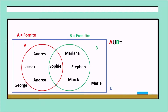In this case, we have A union B. That is equal to all elements that are in A and B. For example, we have people who like Fortnite and Free Fire — from sets A and B. That is Andres, Jason, Andrea, Sophie, Mariana, Stephen, and Mark.